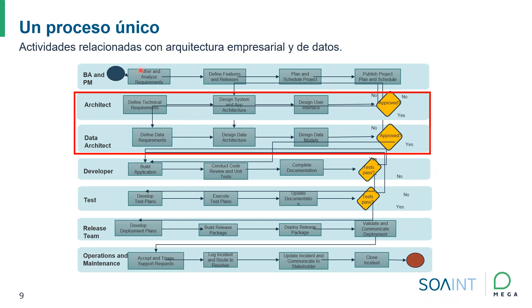Hay diferentes personas que van a tener responsabilidad a nivel de arquitectura de datos y de gobierno de datos. Podemos tener actividades dentro de un ciclo único relacionadas tanto con arquitectura como con datos. Comenzamos analizando un conjunto de requerimientos, identificando cuáles van a ser los releases y las características principales, realizando un plan de proyecto, publicando un proyecto, haciendo los diseños técnicos a nivel de sistemas y aplicaciones, diseñando las interfaces y posteriormente actividades relacionadas con los datos.